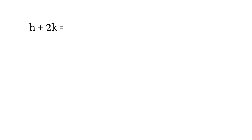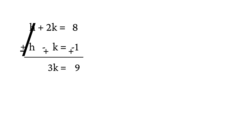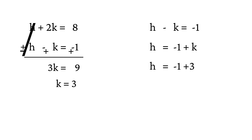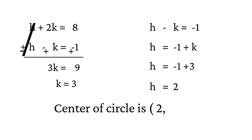Now, let's subtract equation 1 from equation 2. Changing the signs and solving, we get k equals 3. From equation 1, h equals minus 1 plus k. Substituting the value of k, h equals 2. Thus the coordinates of the center of the circle are (2, 3).